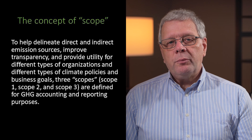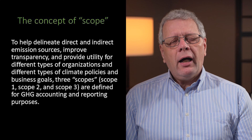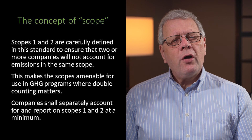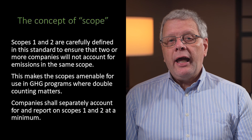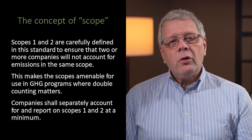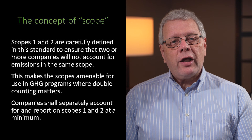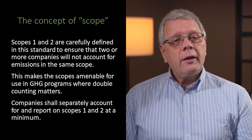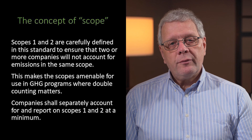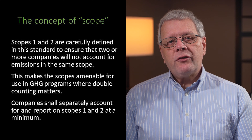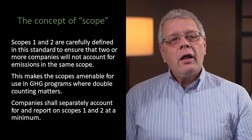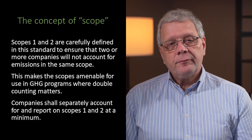Therefore, three scopes — scope 1, 2 and 3 — are defined for GHG accounting and reporting purposes. Scopes 1 and 2 are carefully defined in this standard to ensure that two or more companies will not account for the same emissions under the same scope. This makes the scopes compatible for use in GHG programs where double counting matters. As a minimum, organisations can separately account for and report scope 1 and scope 2 emissions.